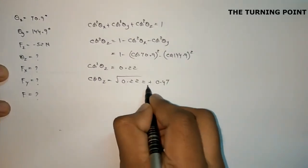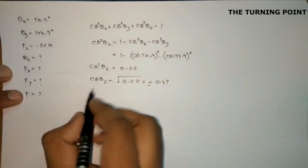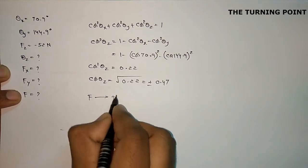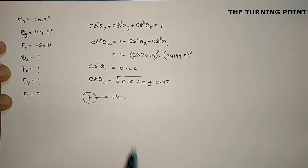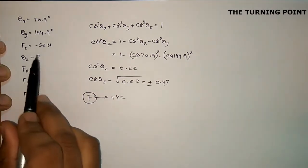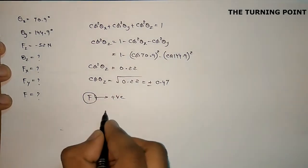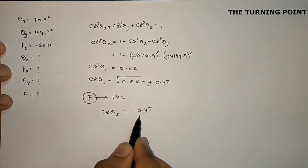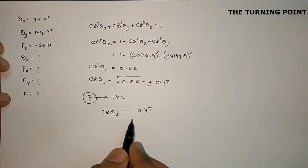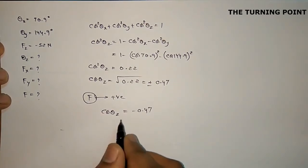This value may be positive or negative. To determine the sign: the magnitude of force F must be positive — it cannot be negative. Since Fz is given as negative, to keep F positive, cos theta z must be negative. Therefore, cos theta z = minus 0.47.